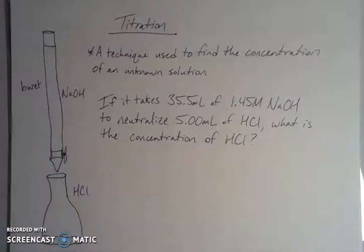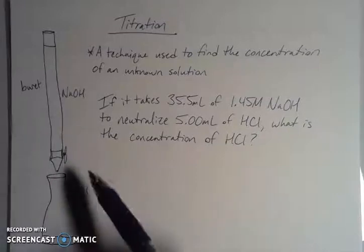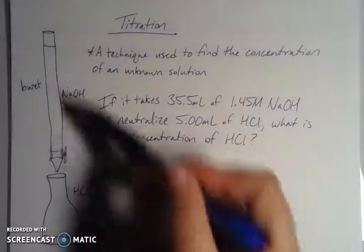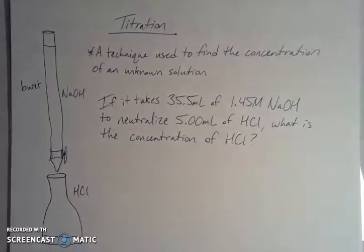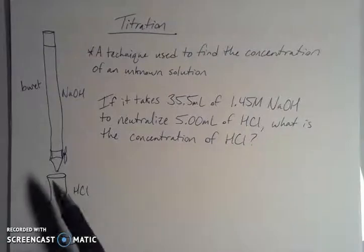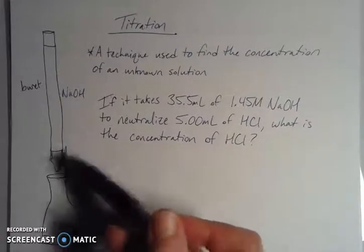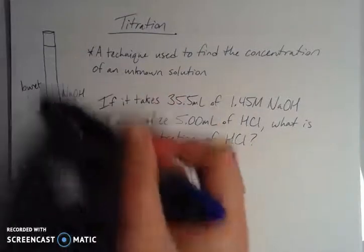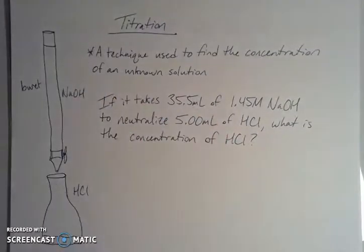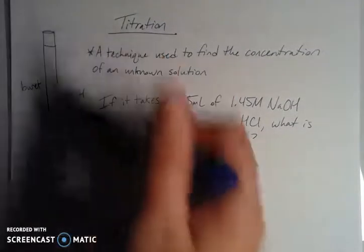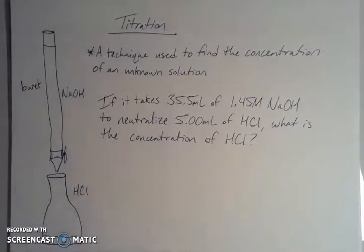Titration involves what is called a burette — a fancy volumetric piece of either glassware or plasticware that has a little stopcock, which allows for the flow of solution from the burette into whatever reaction vessel you have. I have a little Erlenmeyer flask here.